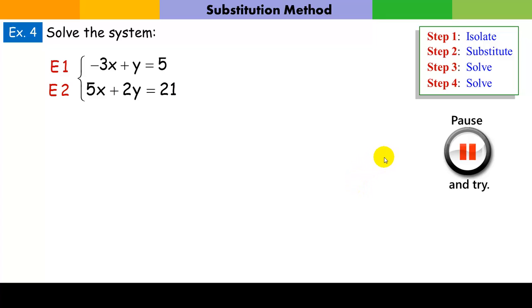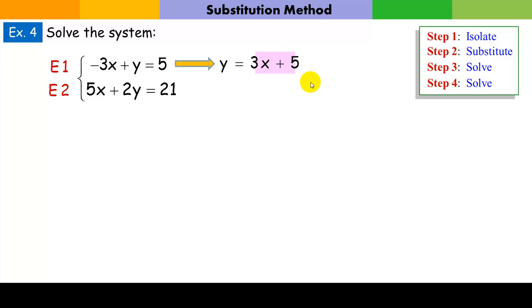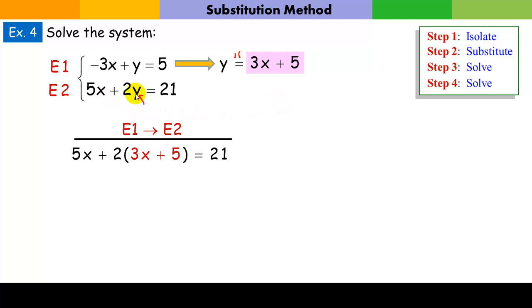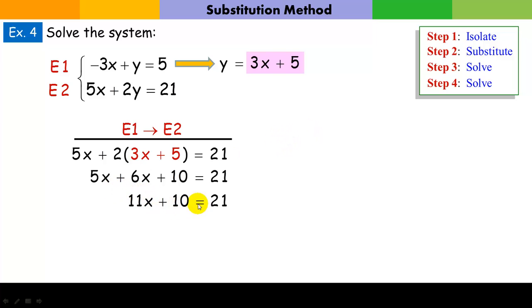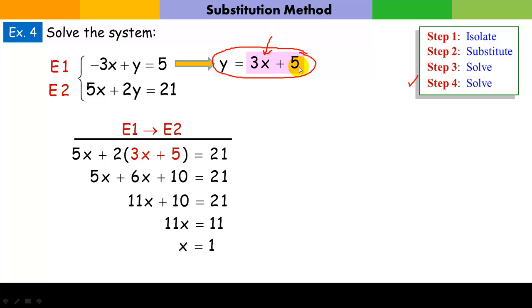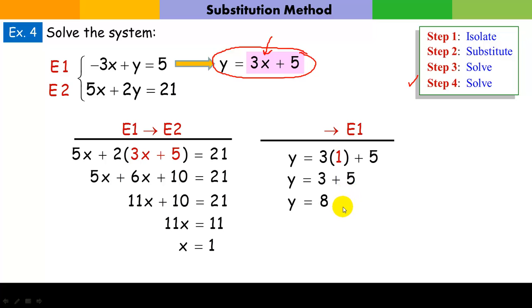Let's try this one. Go ahead and give it a shot. Hopefully you saw that the easiest thing to isolate is y. I'm just going to add 3x to both sides, and I have y alone. Now I'm going to substitute that y — we're saying y is this — right into the other equation. So it's equation one into equation two: 5x plus 2 times y, where my y is now 3x plus 5, equals 21. I'll distribute the 2, combine my terms, subtract 10 from both sides, and divide by 11. I have my x-coordinate of 1. Now I'll solve for y by plugging x equals 1 back in: y equals 3 times 1 plus 5; 3 plus 5, so y equals 8.